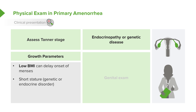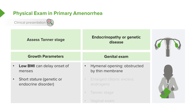We need to assess for an endocrinopathy or a genetic disease. Through the genital exam, we need to check the hymenal opening for obstruction by a thin membrane or bulging menses underneath. We need to check for an enlarged clitoris, which may result from excess androgens, and assess the Tanner stage with a general vaginal exam.